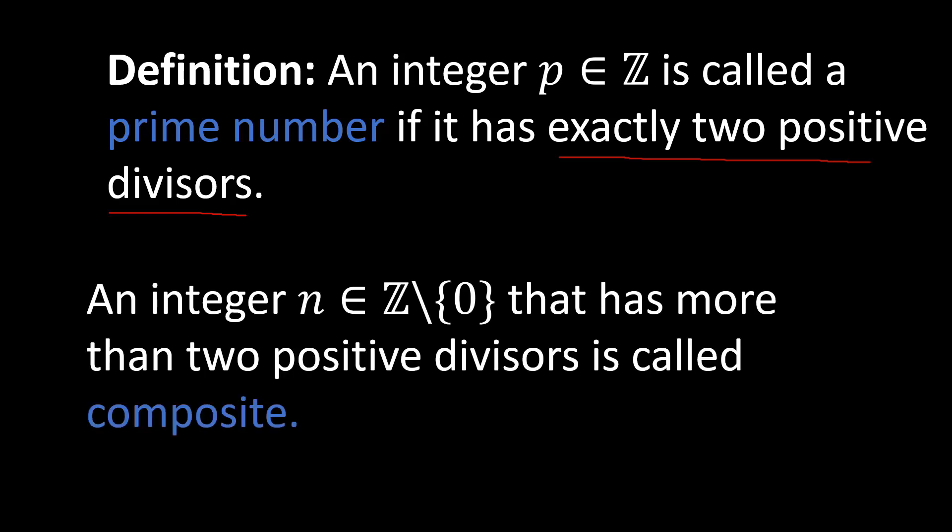We're also going to say that something is composite. A non-zero integer is composite if it has more than two positive divisors, and we will call it a composite number. I also want to point out that I don't include the number zero, for a reason I'm going to show you in a second. So a prime number has exactly two positive divisors, and a composite non-zero number has more than two.